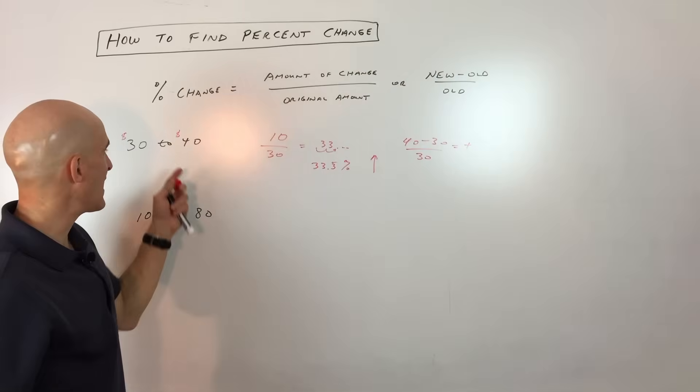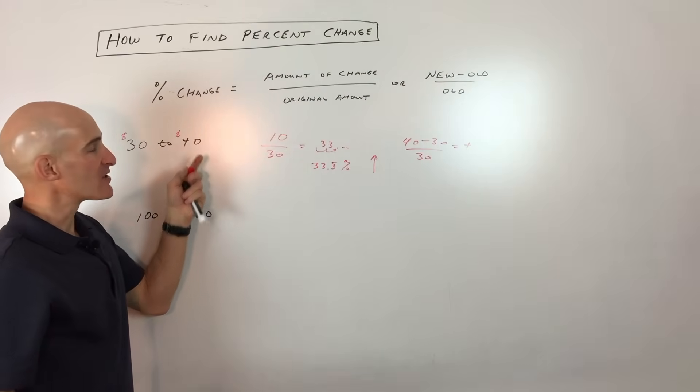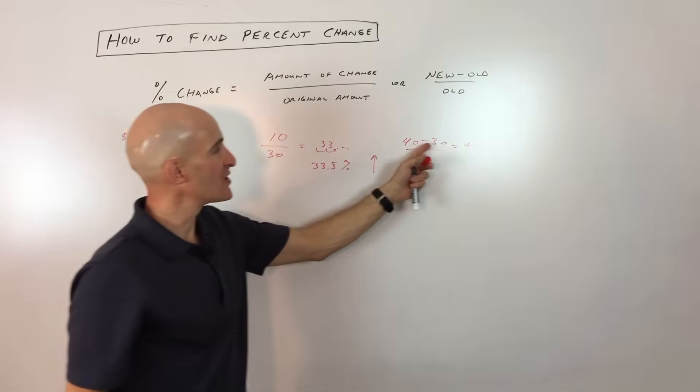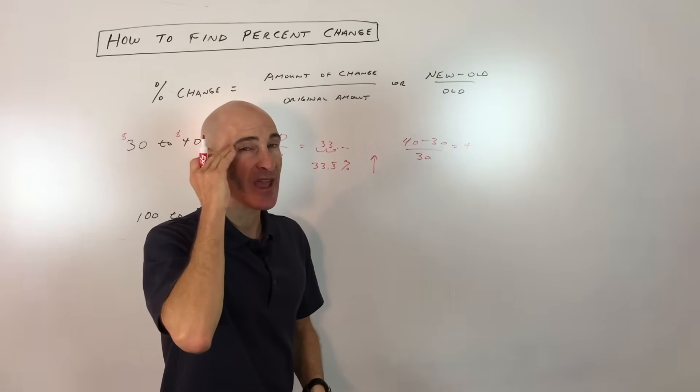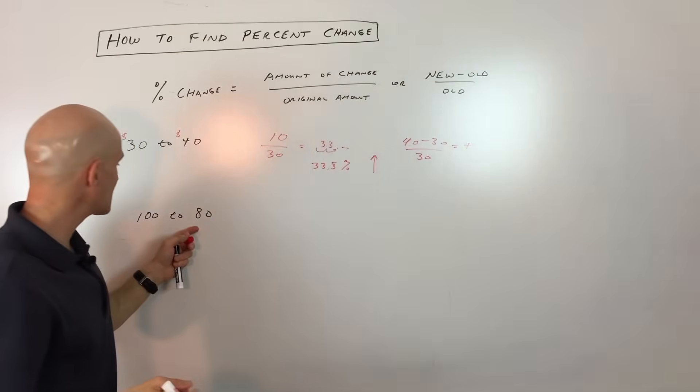Now a lot of students will say, well that's kind of obvious - we went from 30 to 40 - but sometimes it just helps when you're doing this. If you get a negative number, that'll trigger in your mind: negative, that's going down, it's decreasing. So let's go to the next example: